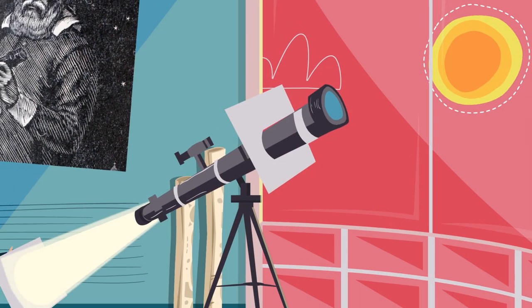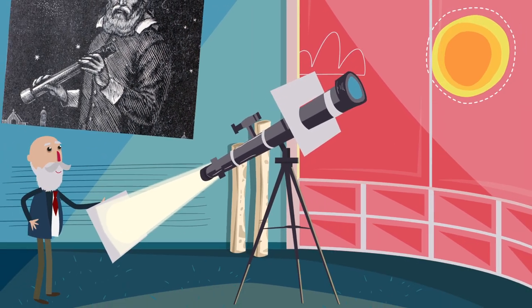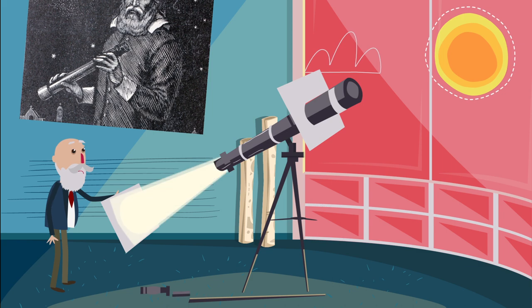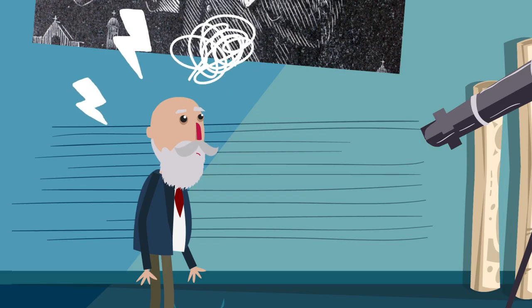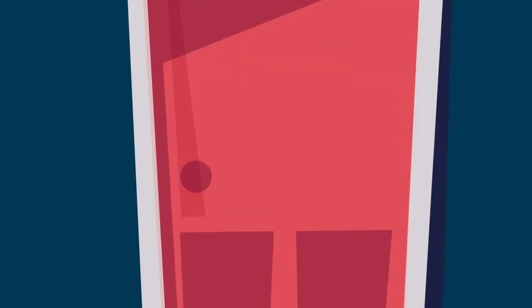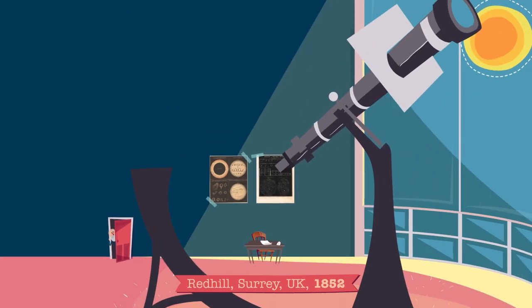After graduating, he joined the observatory of Durham University, where he studied stars, comets and asteroids. Sadly, the observatory was not well equipped. After many complaints, he decided to resign and build his own telescope.